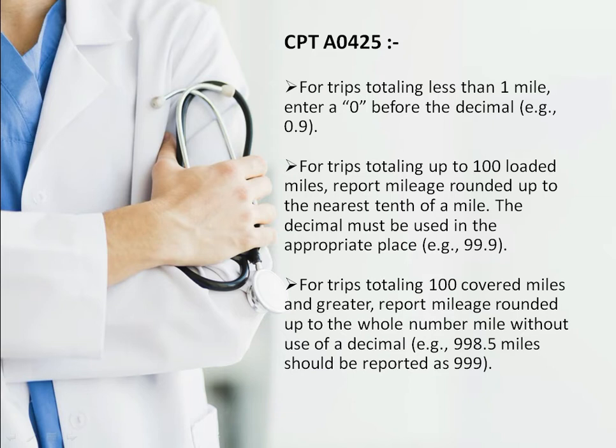When reporting mileage, use decimal points — for example, if it is 6.2 miles, report it as 6.2. For trips totaling less than 100 miles, use decimals. For trips of 100 miles or greater, you can round up to the whole number mile without a decimal. For example, 998.5 miles can be rounded up to 999 miles.